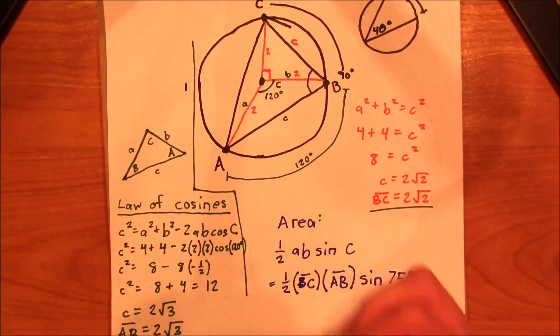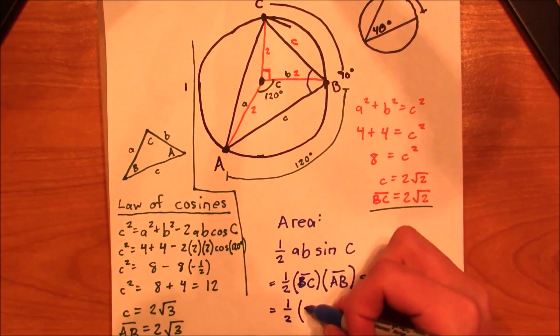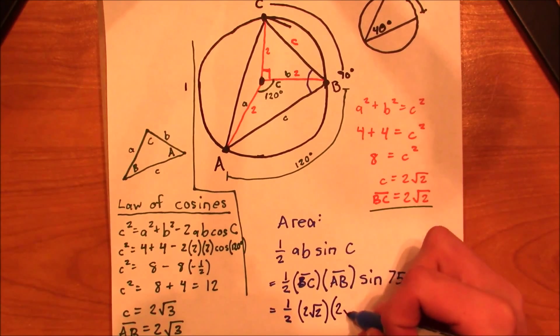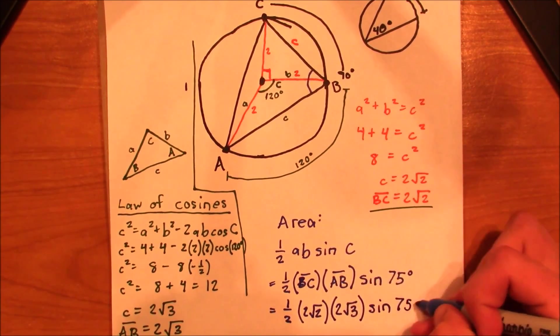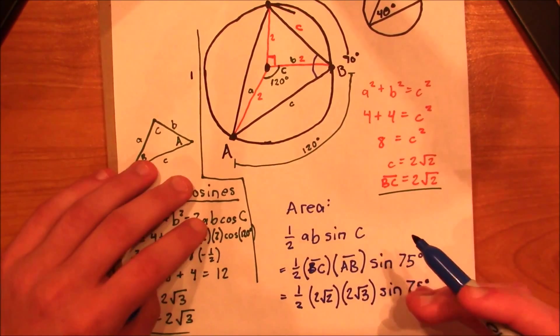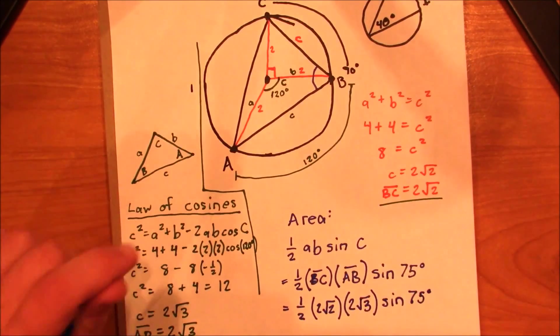And so if I now put in the numbers, this is going to be 1 half 2 root 2 times 2 root 3 times the sine of 75 degrees. And if I plug this into a calculator,